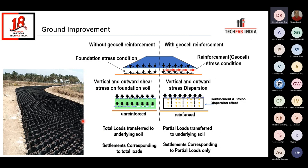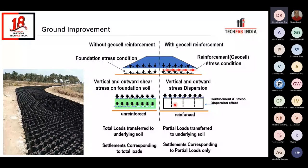The Geocell, filled with aggregate materials, exerts lateral pressure or a confinement effect. Due to this confinement effect, the stresses coming from the superstructure are dispersed laterally, transferring the load to a wider area onto the subsoil. So only partial loads are transferred onto the underlying soil. That means the intensity of pressure going onto the subsoil is low. If you have a weaker soil with low bearing capacity, this can enhance the bearing capacity. Also, since pressures are dispersed, differential settlements will be controlled using the Geocell for ground improvement.